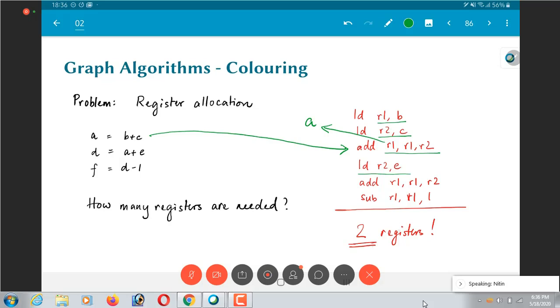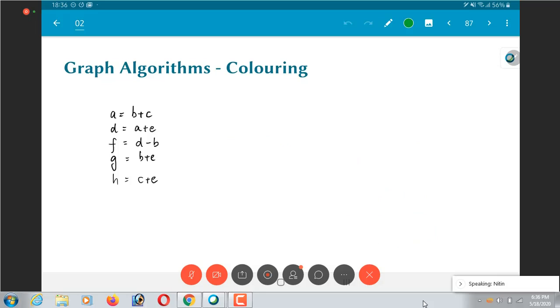How do I generalize this? Let us look at a more complex example with a few more instructions out here. What I can say is I can take this particular problem and construct a graph. I have used dots over here instead of circles to indicate the different nodes in this graph. A, B, C, D, E, F, G and H. These are the different variables present in the code that I have.